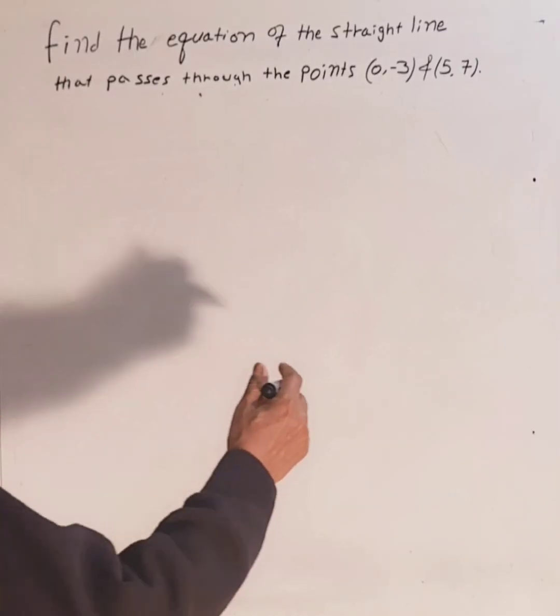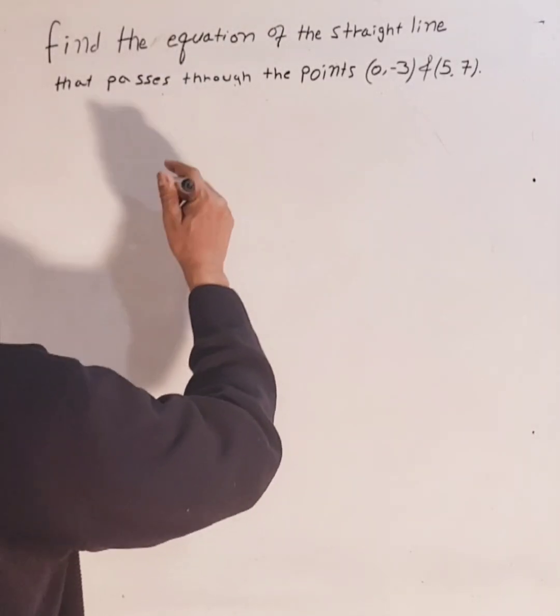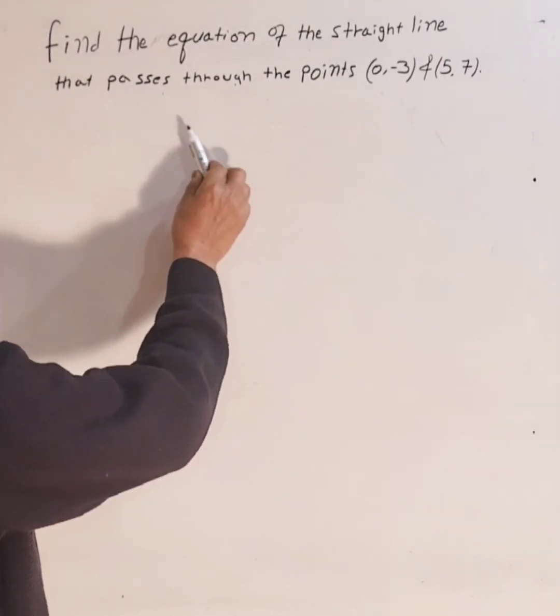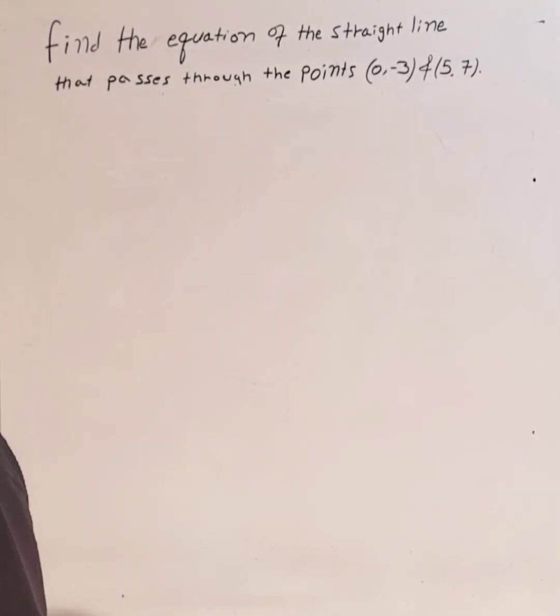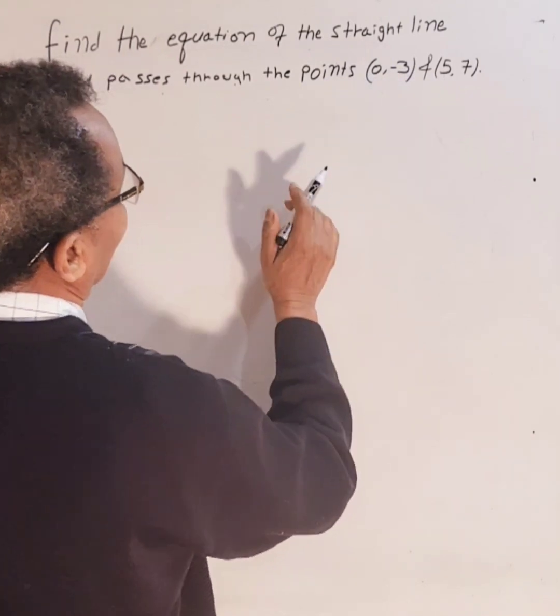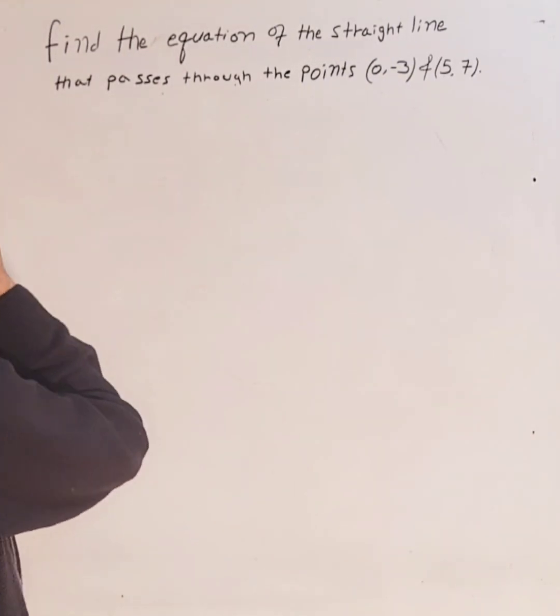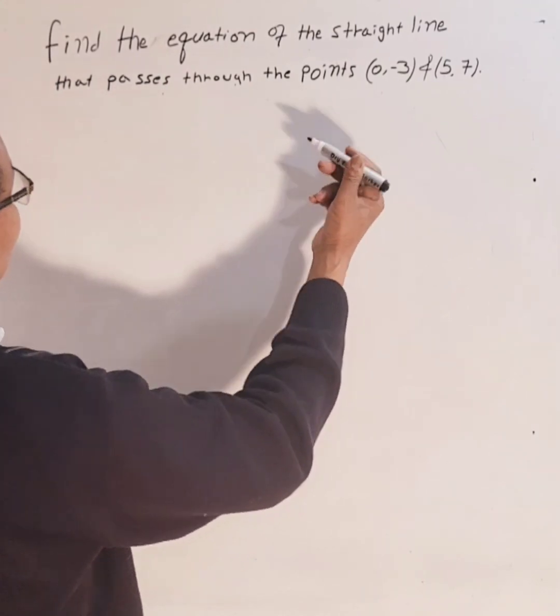Hey everyone, let's do this one. Find the equation of the straight line that passes through the points (0, -3) and (5, 7).